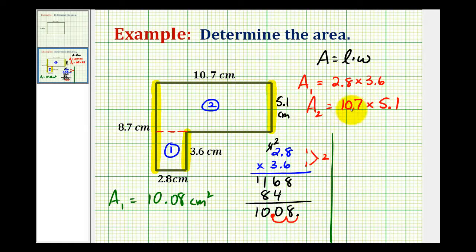Now let's go ahead and determine the product of 10.7 and 5.1. We have one decimal place here and one decimal place here, so our product must contain two decimal places.